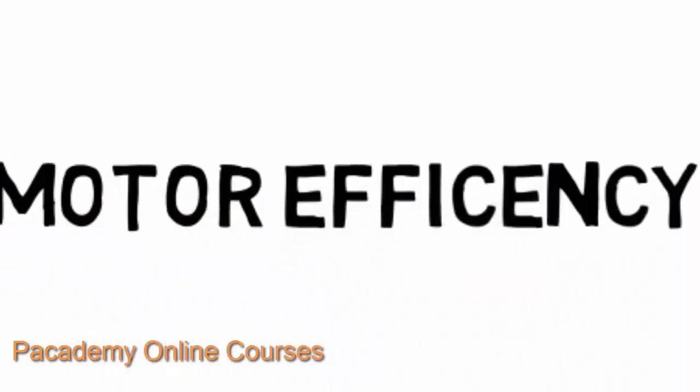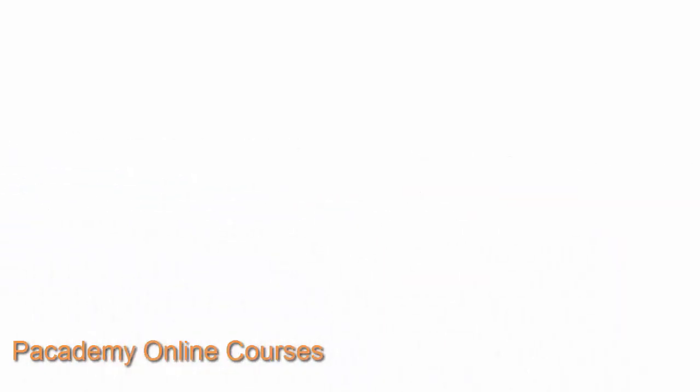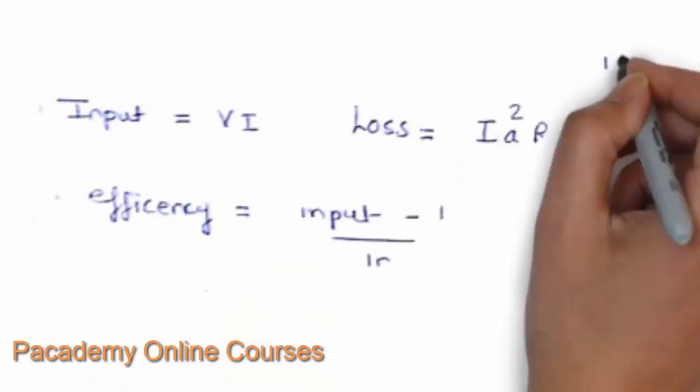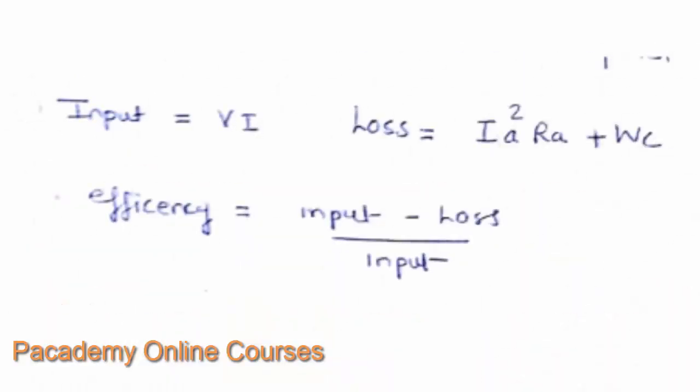The motor efficiency can be determined as follows: the input is V·I, and the losses equal IA squared multiplied by RA (the armature copper losses) plus WC (the friction, windage, and constant losses). The efficiency is then: (input minus losses) divided by input. This gives the motor efficiency.